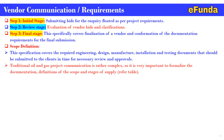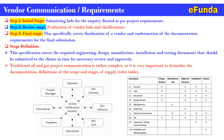Oil and gas project communication is rather complex, so it is very important to finalize documentation definitions of the scope and stage of supply. One can refer to the picture showing an online collaboration solution interfaced with EPC onshore, EPC offshore, EPC civil, operations, supplier, consultant, project manager, and operator — this illustrates how multi-dimensional communication is done. For better understanding of the scope of supply, one can refer to the table covering design review stage, manufacturing stage, shipment, closeout, and installation contract, with parameters such as CAD documents, design review, manufacturing, shipment, safety and environment, QA, inspection, testing, commissioning, and reliability and maintainability.